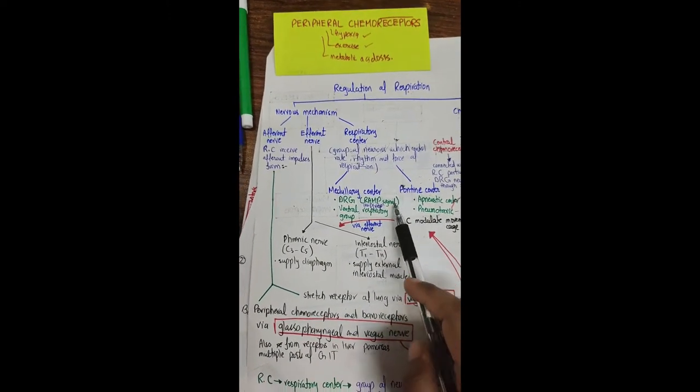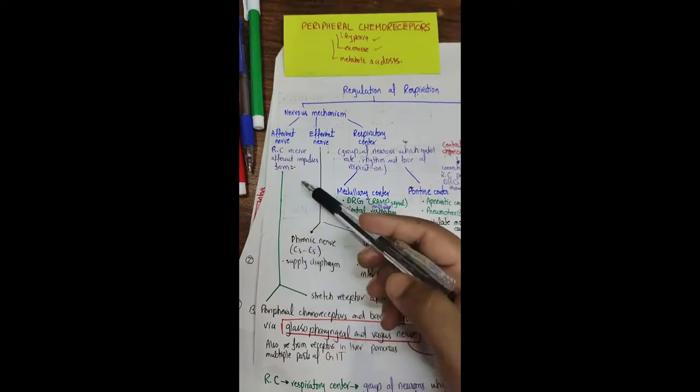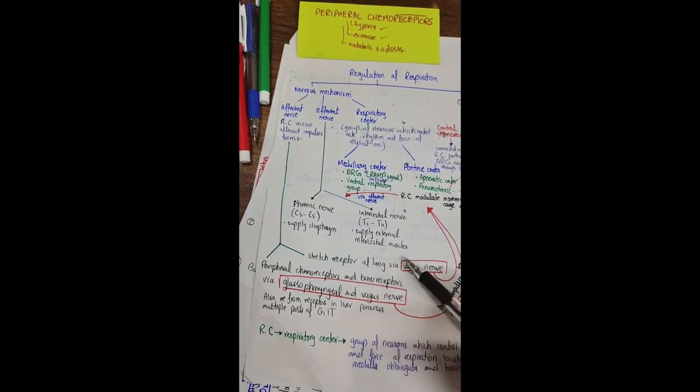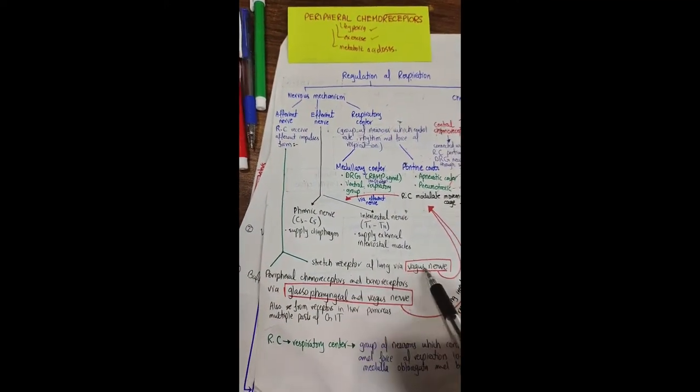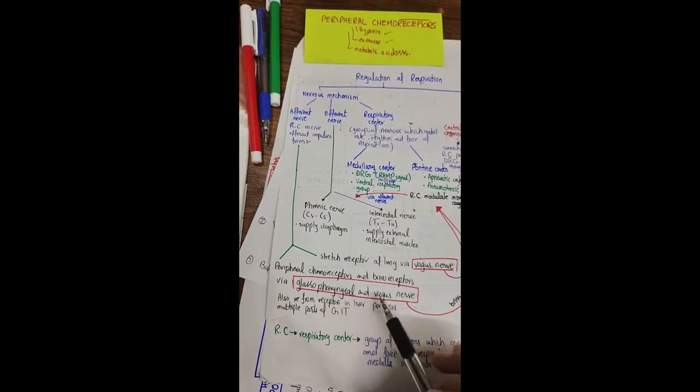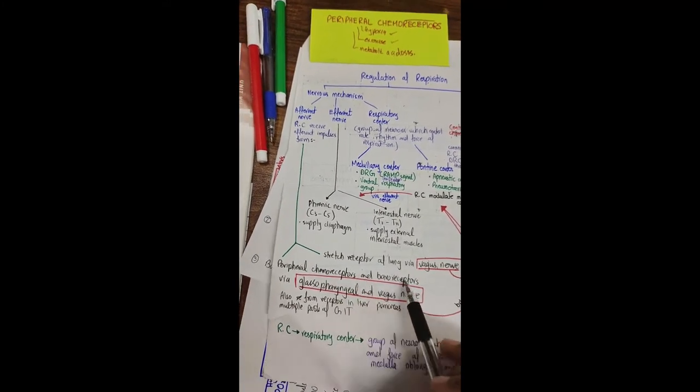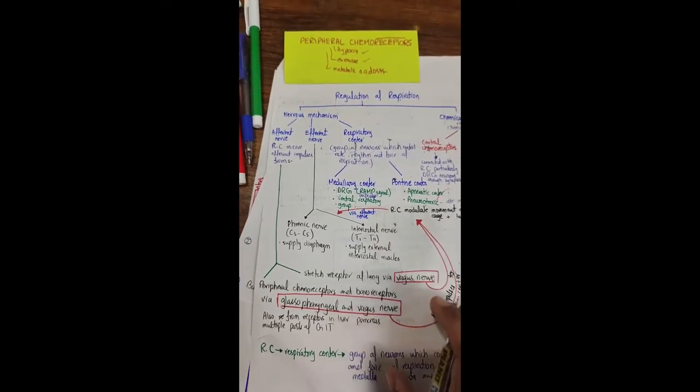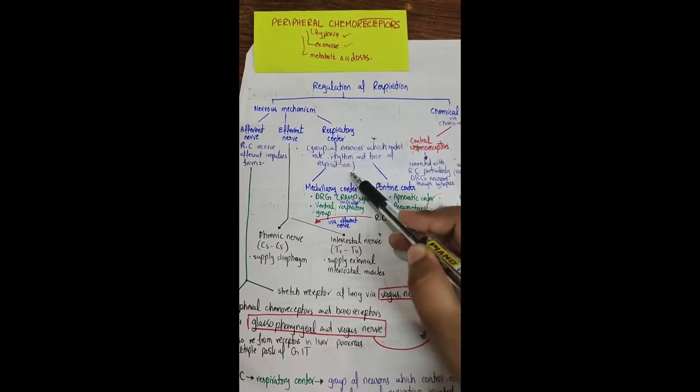This respiratory center receives impulses through afferent nerves. In afferent nerves we have glossopharyngeal nerve, vagus nerve. Vagus nerve innervates stretch receptors of lungs. And glossopharyngeal and vagus nerve innervate peripheral chemoreceptors, baroreceptors, and all these impulses are brought to the respiratory center.